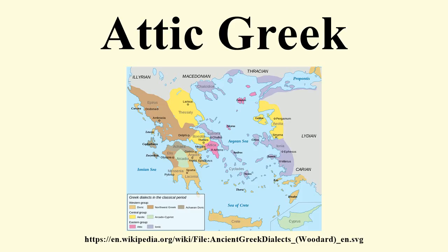Movable N: Attic and Ionic place an N at the end of some words that would ordinarily end in a vowel, when the next word starts with a vowel, to prevent hiatus. For example, 'pasin elegon' (they spoke to everyone) versus 'passy legousin' (they speak); 'elege' (he was speaking), 'tithesi' (he places, makes).